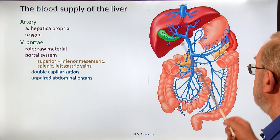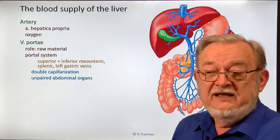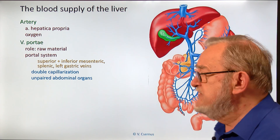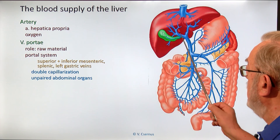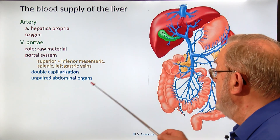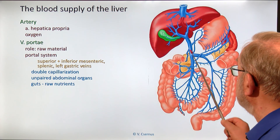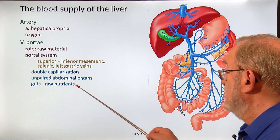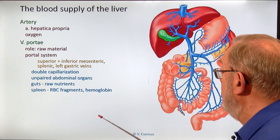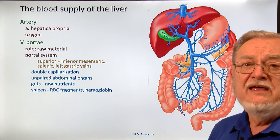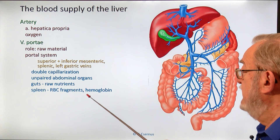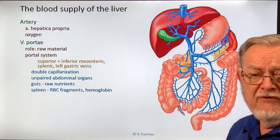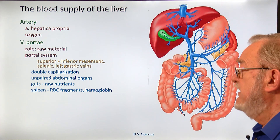Which organs drain their blood into the portal system? There is a very useful rule: all organs located in the abdomen of which we normally have only one will drain into the portal system. These are the unpaired abdominal organs. Especially important are the veins from the gut carrying raw nutrients — the primary task for the liver — and from the spleen, which processes old erythrocytes; the hemoglobin and membrane fragments are both harmful to the general circulation and are sent to the liver for elimination.